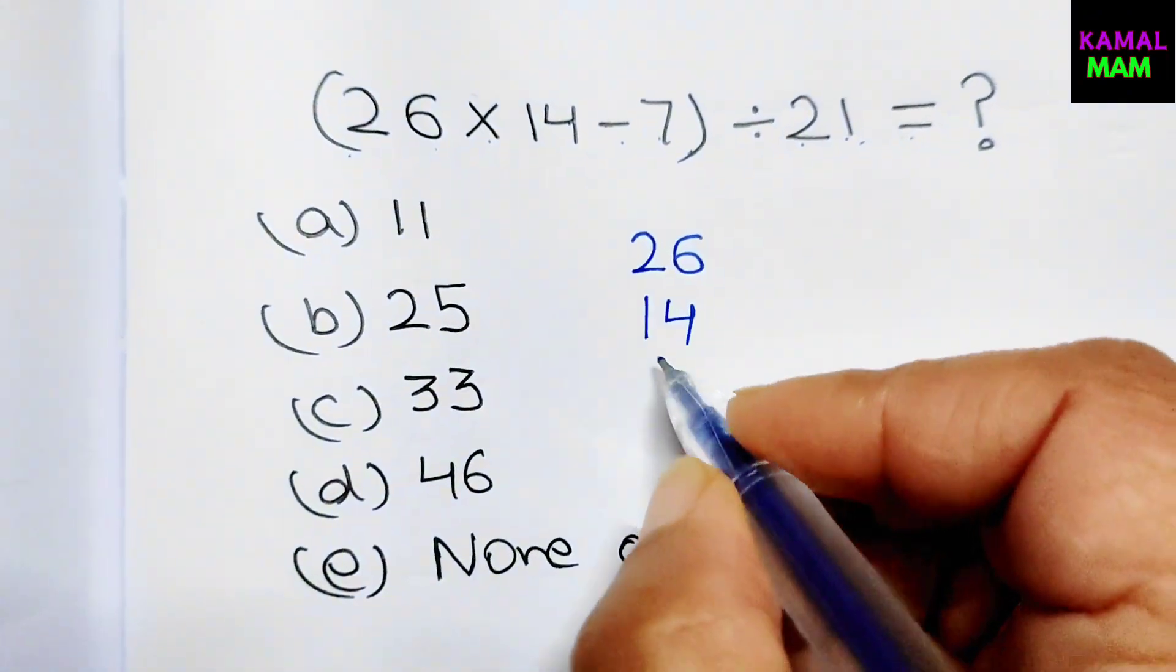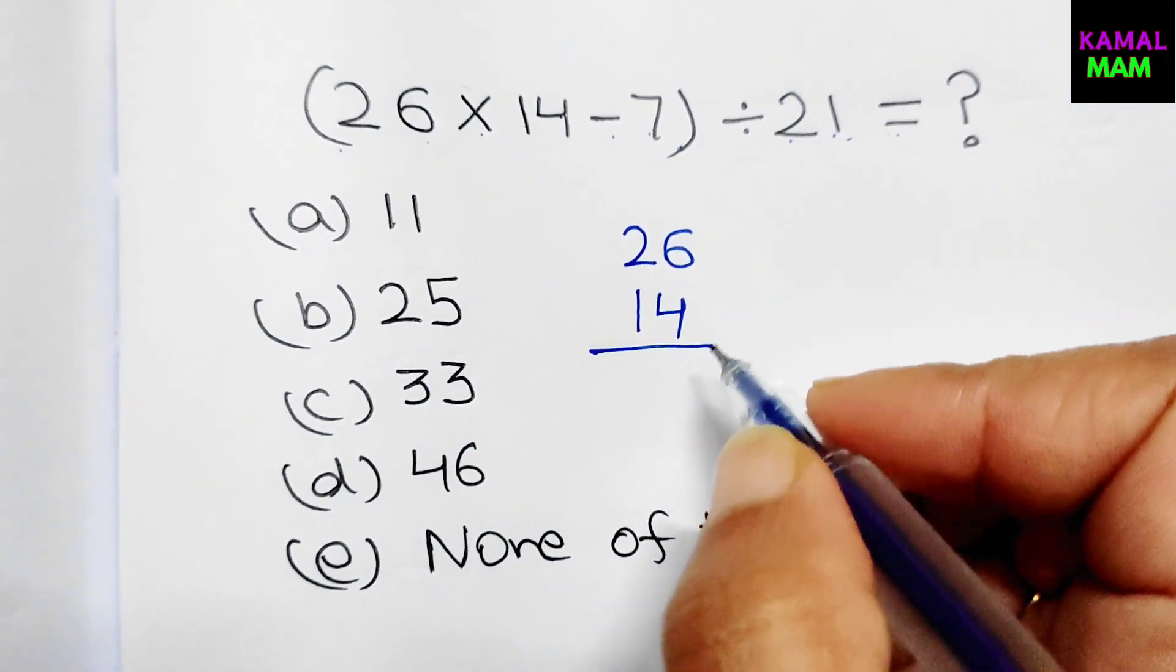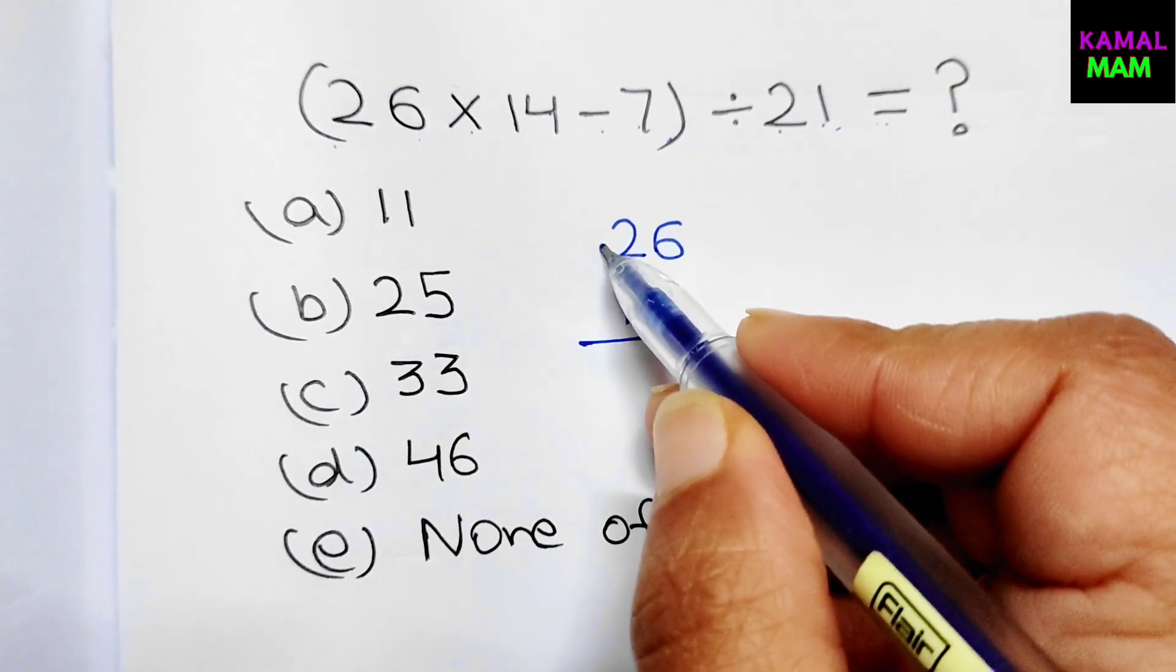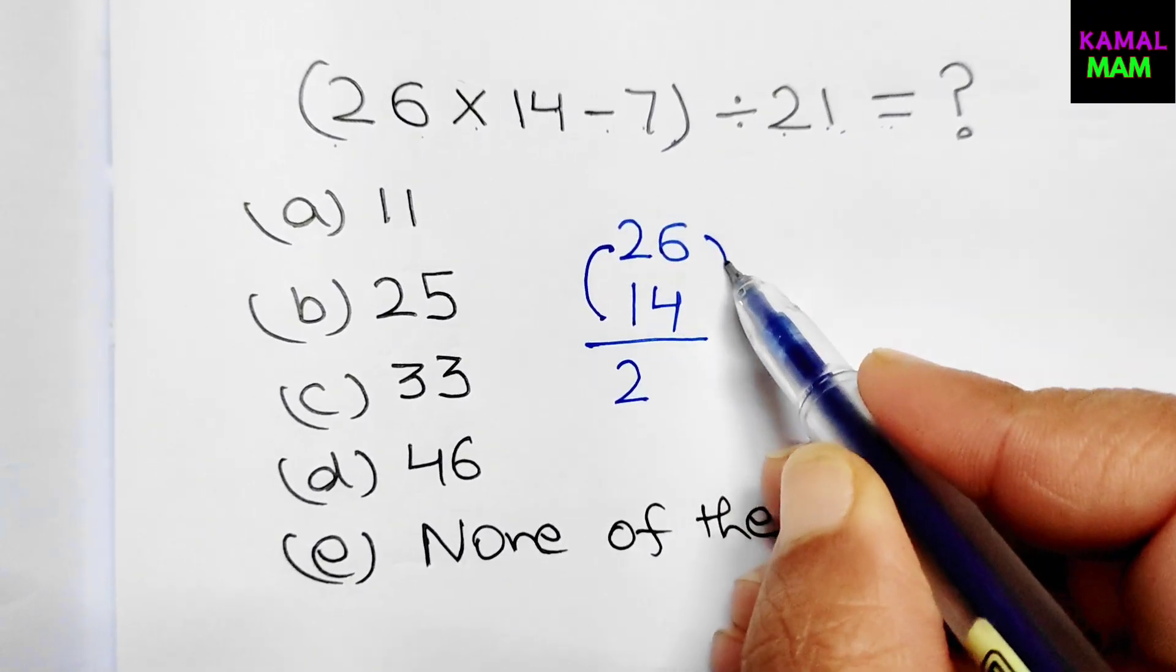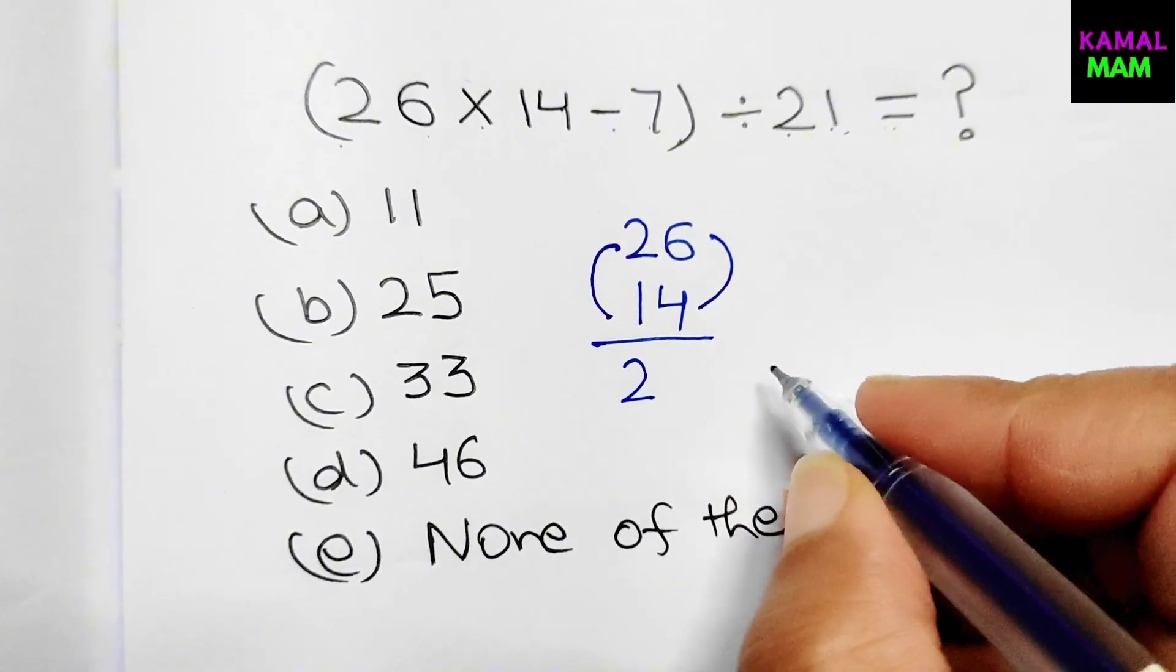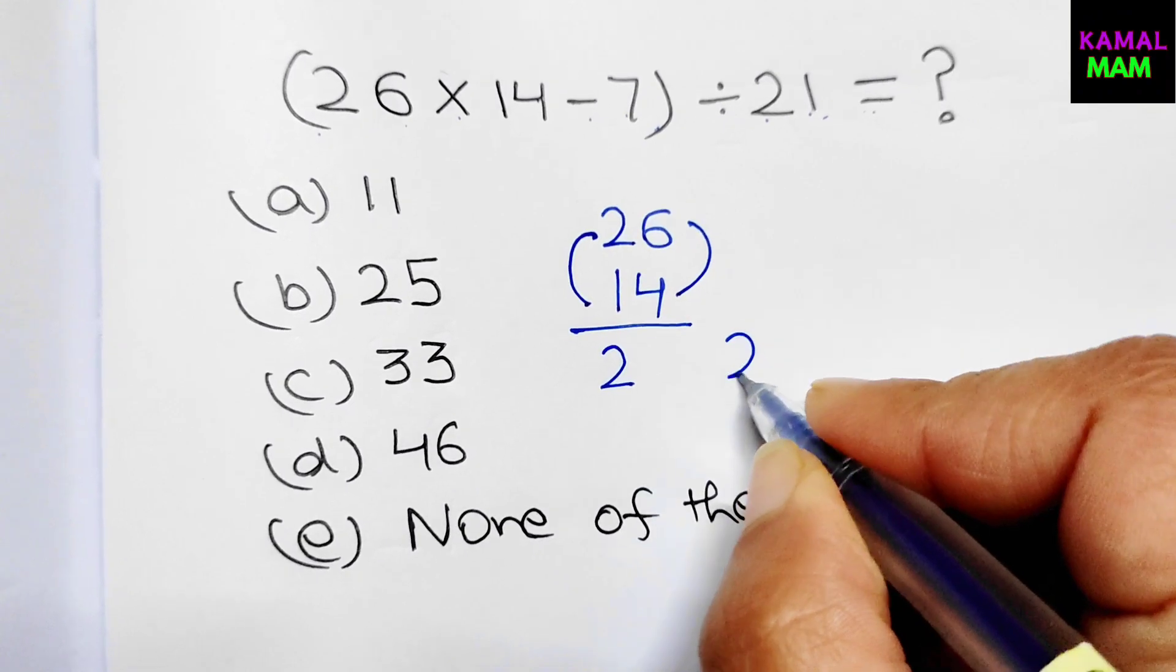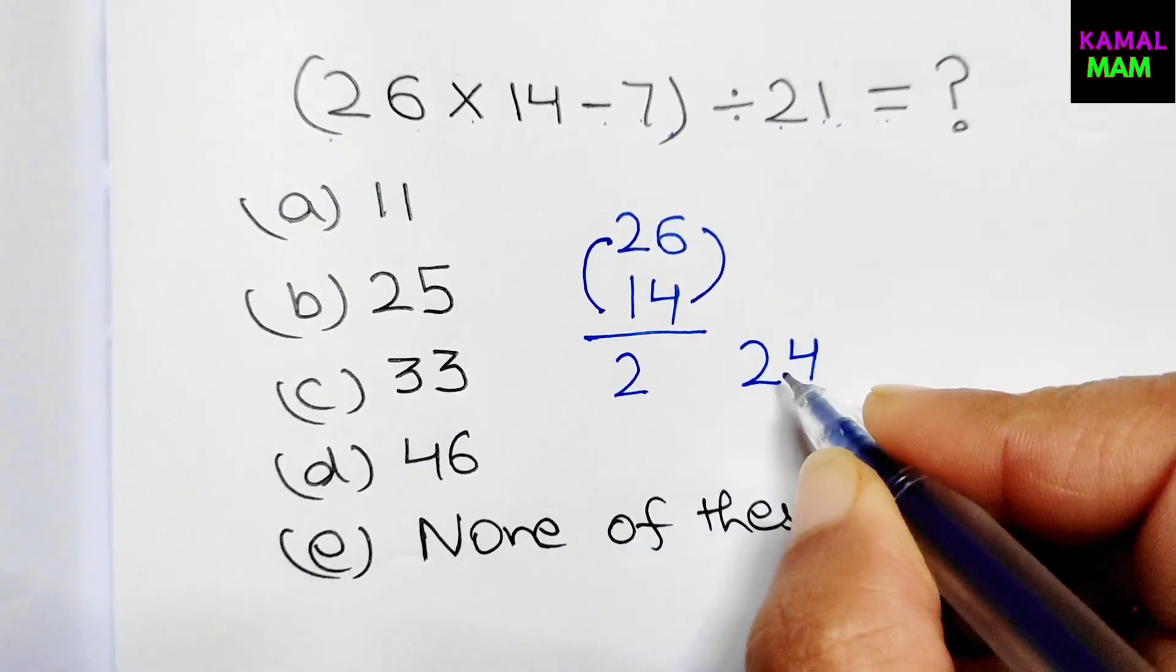I have a super trick to solve it. First of all, just multiply 2 into 1, we get 2 here. Then multiply 6 into 4, we get the number 24. Just write it down separately here.